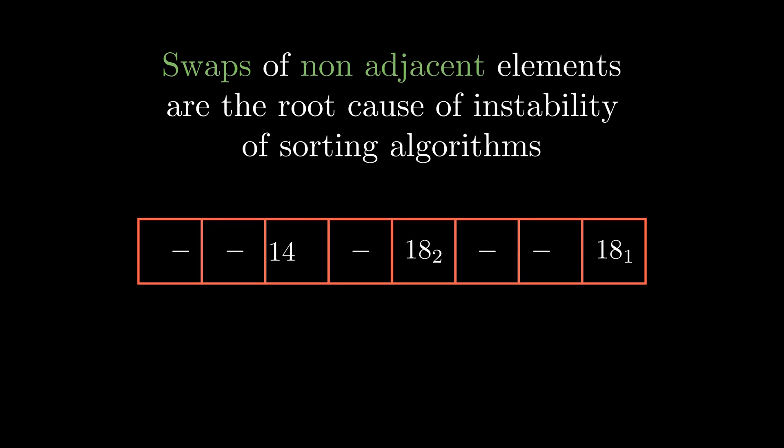If you could quickly identify that there is another 18 in the array, 18₂, then you could have swapped that 18 with 14 and preserve the stability. But to find another 18 will take O(n) time and that would destroy the efficiency of the algorithm.